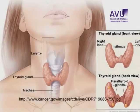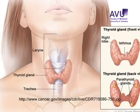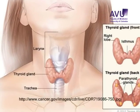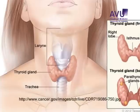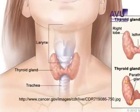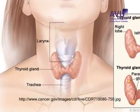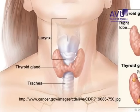The thyroid gland is located in the anterior triangle of the neck with its two lobes on either side of the trachea connected by the isthmus.